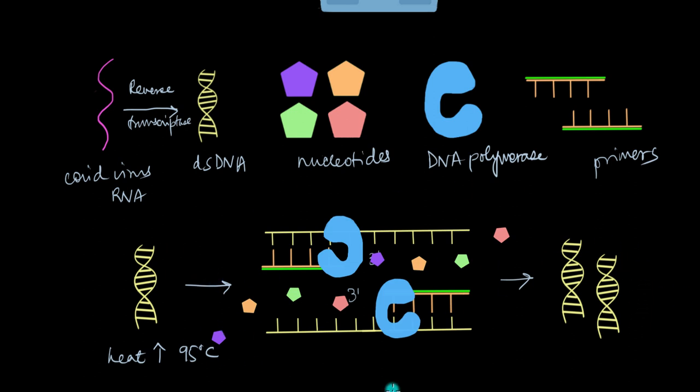So this entire cycle from separating out the strands to adding the primers, then DNA polymerase adding the nucleotides and making new strands, this entire cycle is repeated several times till we have a huge number of DNA or huge number of nucleic acid with us.